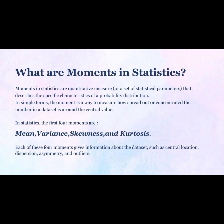In statistics, the first four moments are mean, variance, skewness, and kurtosis. Each of these four moments gives information about the data set, such as central location, dispersion, asymmetry, and outliers.